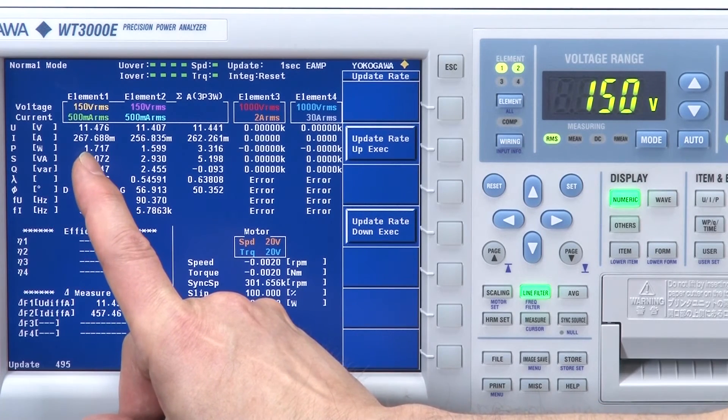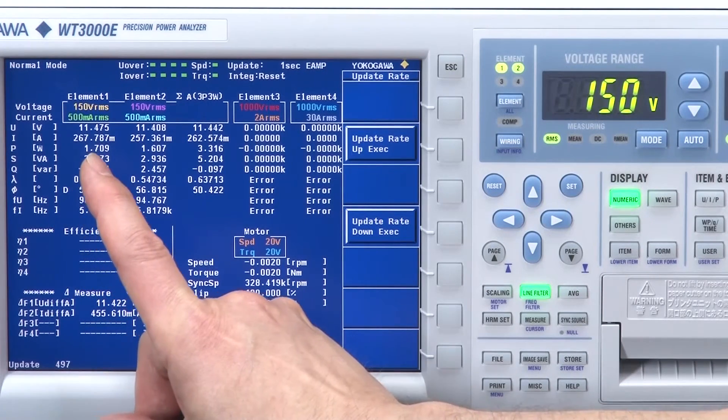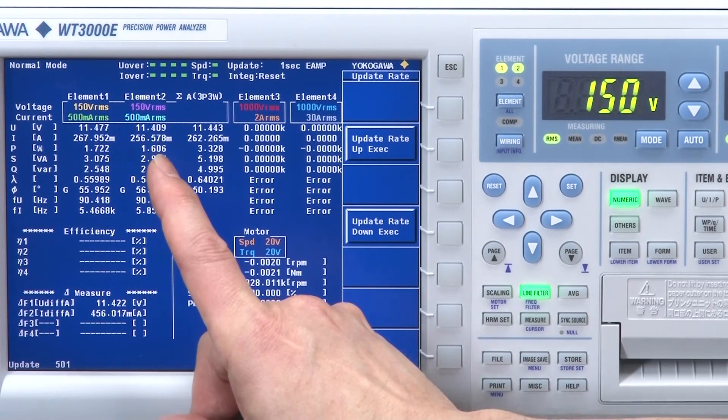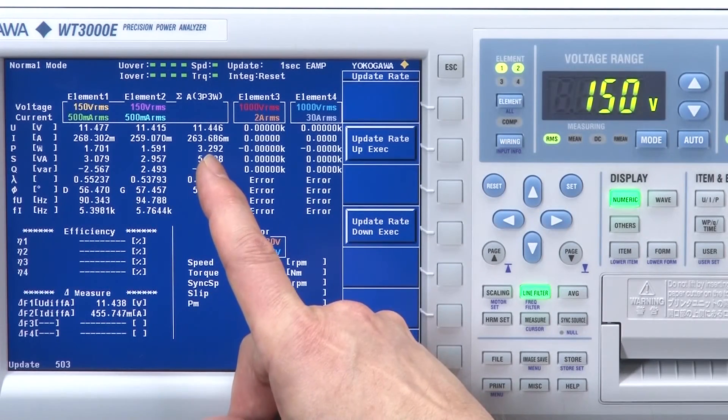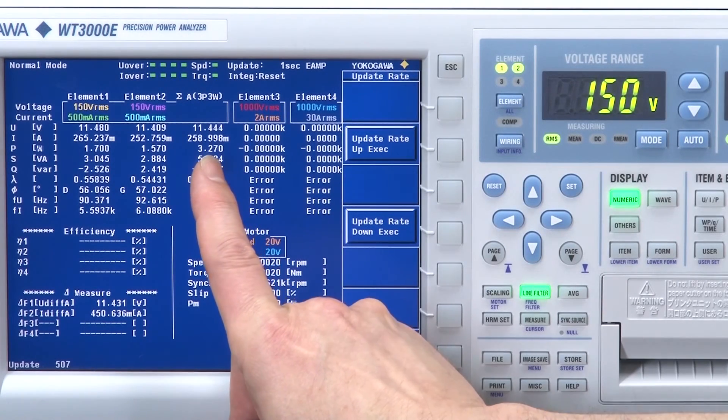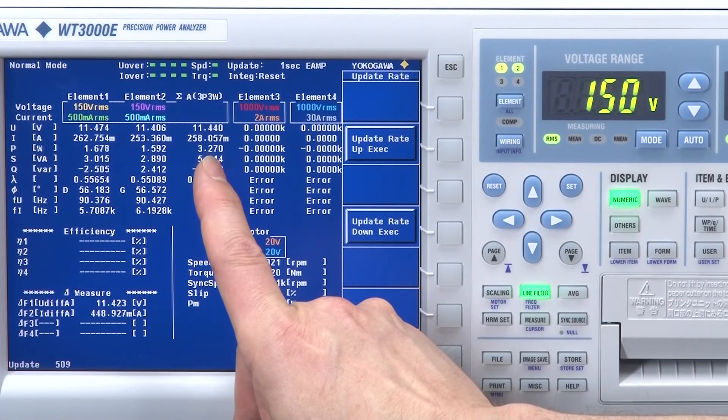I have total power of P1 here, 1.7 watts for element one and 1.62 watts for element two. And then a total power of 3.29 watts. So you can see that P1 plus P2 equals total power.